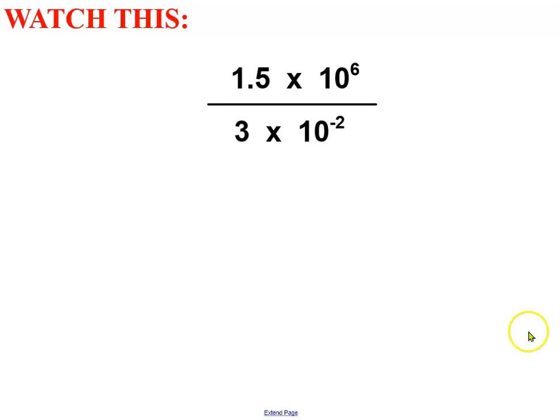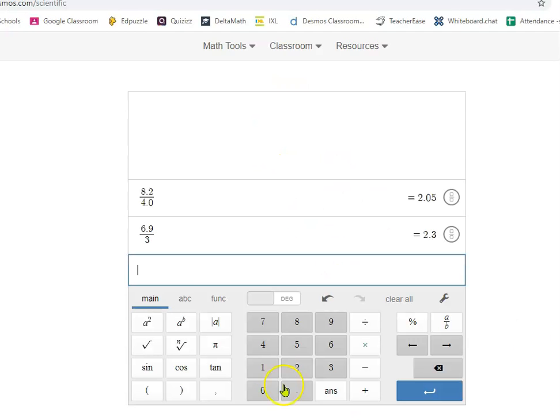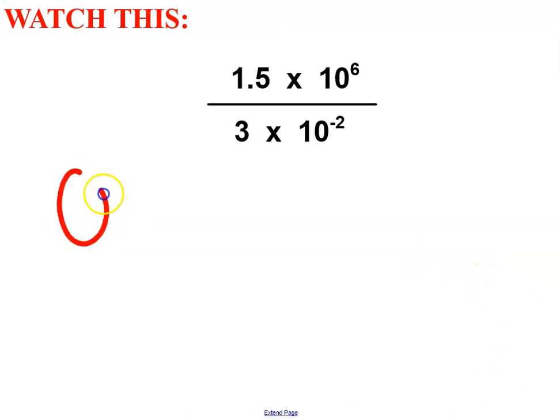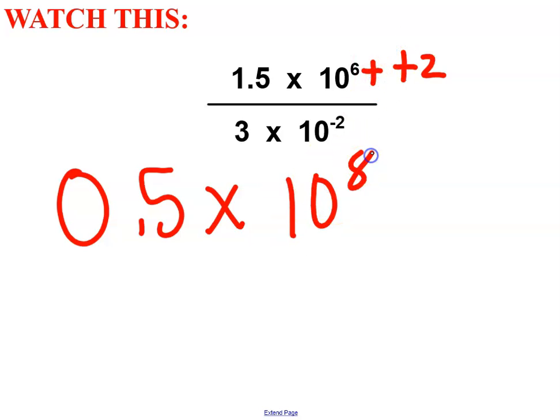Here we go. 1.5 divided by 3. 1.5 divided by 3. The answer is 0.5. 0.5 is my coefficient. And 6 minus minus 2. Ooh, you see that? 6 minus a minus 2. You know what that means. 10 to the 8th.